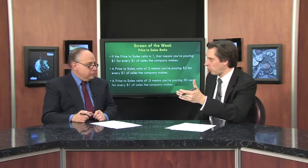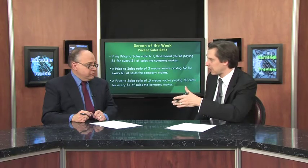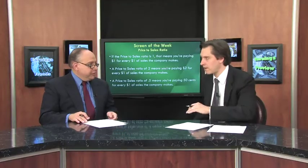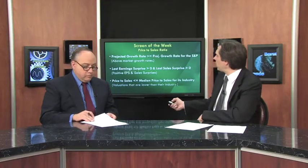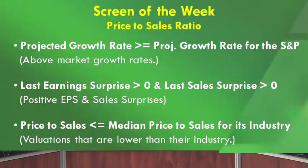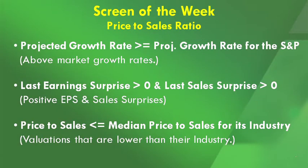When using the price-to-sales ratio, a P/S under one is preferred, though up to four is acceptable depending on the industry. The best approach is to compare it to the median for its industry — and that's exactly what this week's screen does. It starts by looking for companies with a projected growth rate greater than or equal to the growth rate for the S&P, ensuring above-market growth rates.